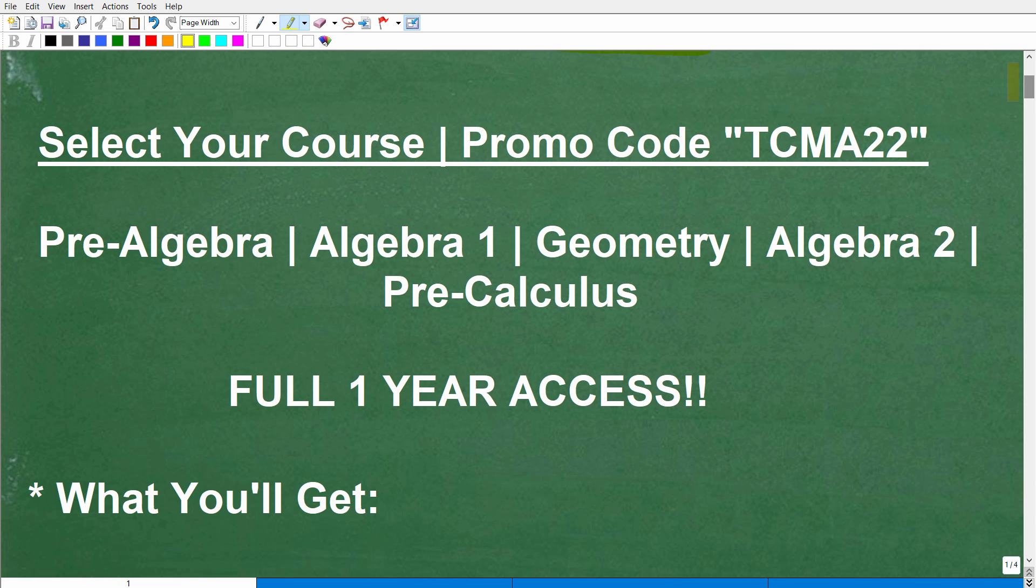First of all, you'll find all the links and discount codes in the description of this video. But this sale is going to apply to full one-year courses in pre-algebra, Algebra 1, Geometry, Algebra 2, and Pre-Calculus. And the discount code is TCMA22. And again, you can find all this information in the description of this video.